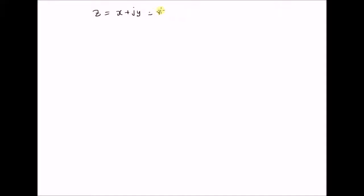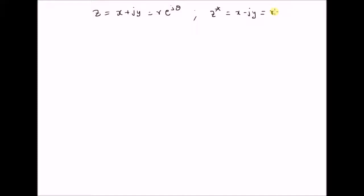Given the complex number z is equal to x plus jy, where j is the square root of minus 1, and this is also equal to r times e power j theta, where r is equal to square root of x squared plus y squared, and theta is the phase of the complex number z. Then its conjugate z star is equal to x minus jy, which is equal to r times e power minus j theta.